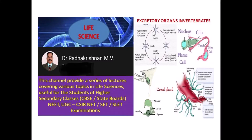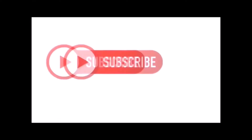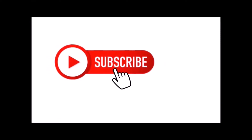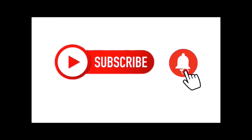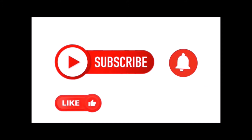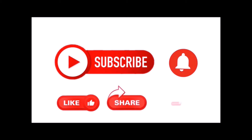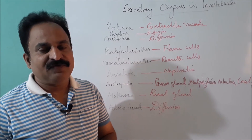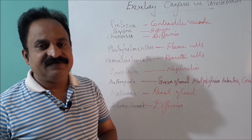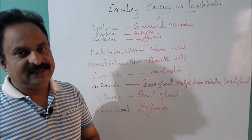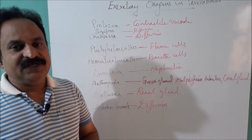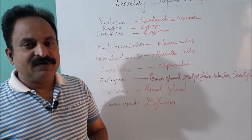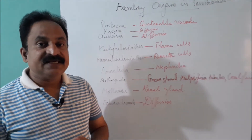Dear students, the topic is excretory organs in invertebrates. Excretion is the process of elimination of nitrogenous waste material from the body of an organism or cell. In this video, we can discuss about the excretory organs in invertebrates.